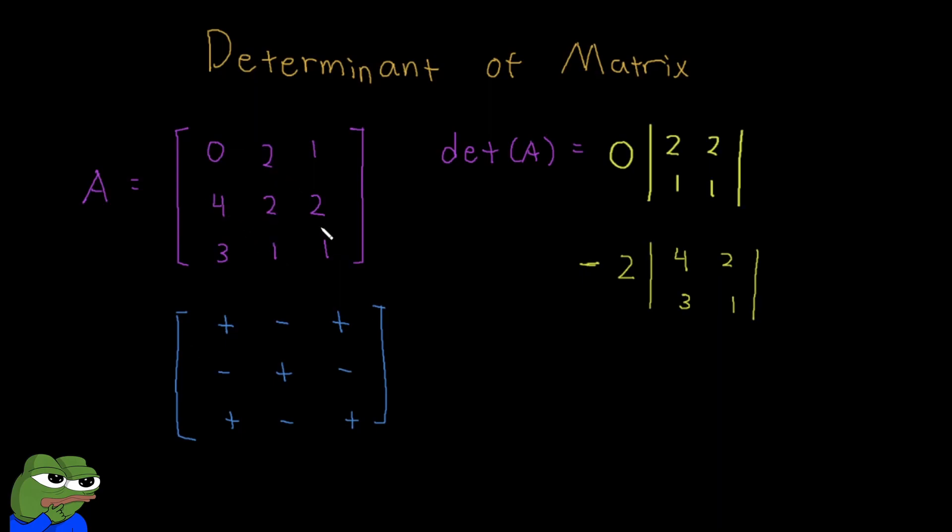Now we move on to our last term. For our last term, we repeat the same process. So again, we move, since we chose row 1, we move to this element. So now we cross this out and we cross this out. And now what's left, again, is 4, 2, 3, 1.